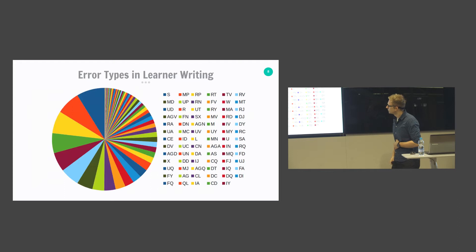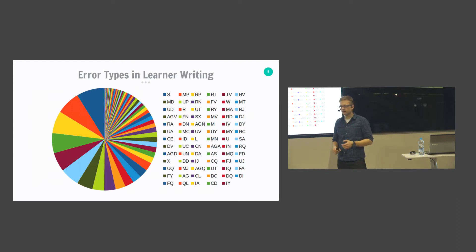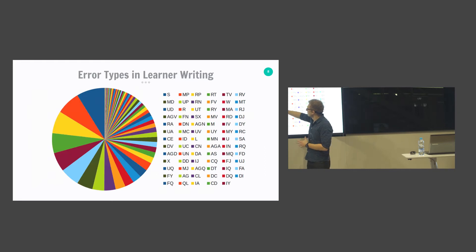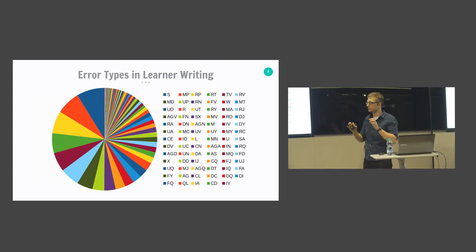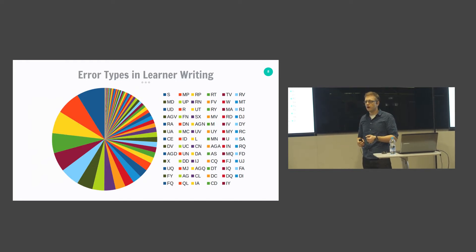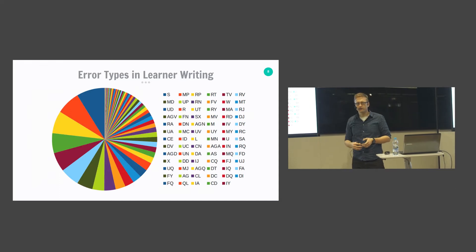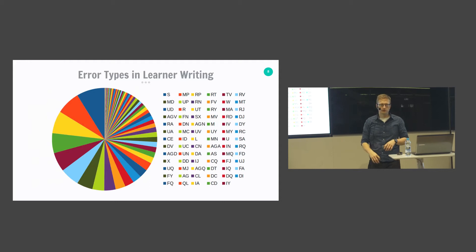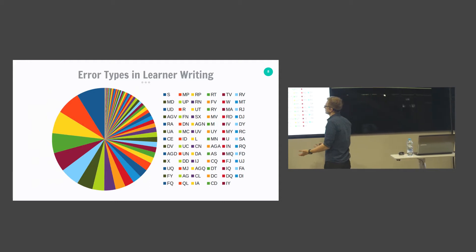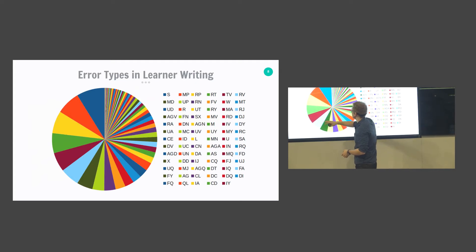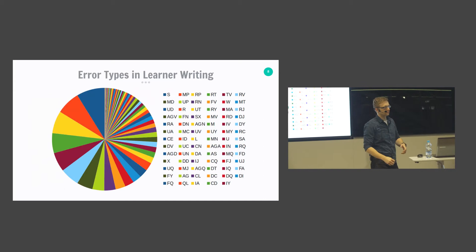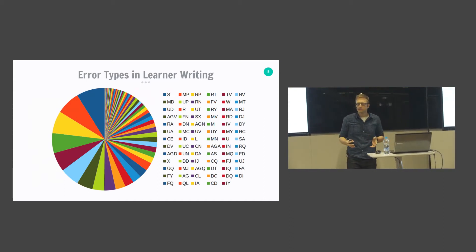Here you can see a distribution of the different errors annotated in data from language learners. Each color represents a different error type, and the blue triangle represents spelling errors — the most frequent error type in learner data. But if we chose to focus only on spelling errors, we would cover only a very small portion of the overall error space, and there's a really long tail of different errors that would be left unhandled.